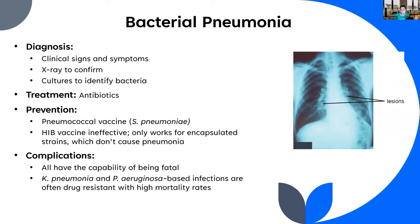Prevention: the pneumococcal vaccine helps. People might think the Hib vaccine prevents Haemophilus influenzae pneumonia, but it only works for the encapsulated strains. There are different strains of Haemophilus influenzae — some encapsulated, some not. The vaccine is specifically for the encapsulated version, which doesn't cause pneumonia. It's the non-encapsulated strains that do — so the vaccine isn't going to help in this case.